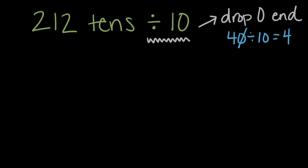Let's use that over here. 212 tens, so we have 212 tens, so 212 ten times. That's how we got the zero there. And we divide that by 10. We can use this first pattern we thought of and just drop the zero on the end. Let's drop that zero and our answer will be 212.